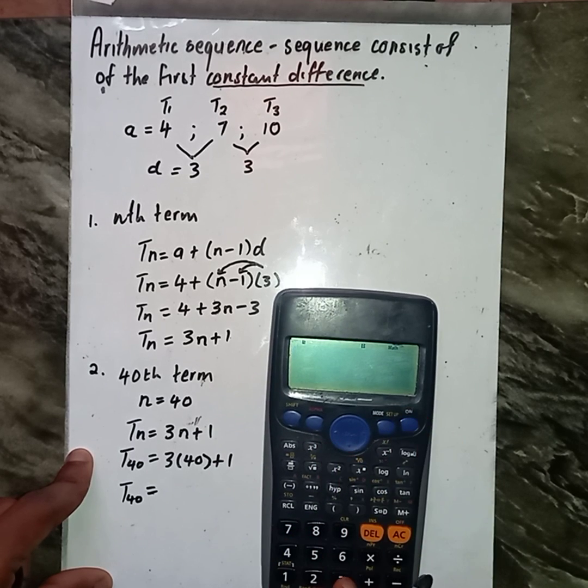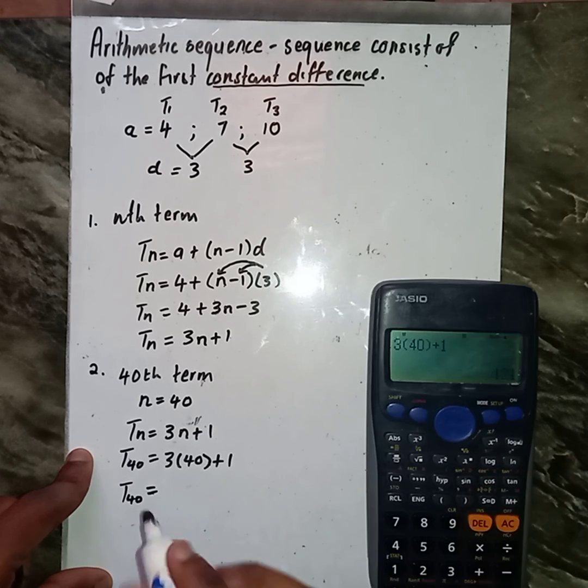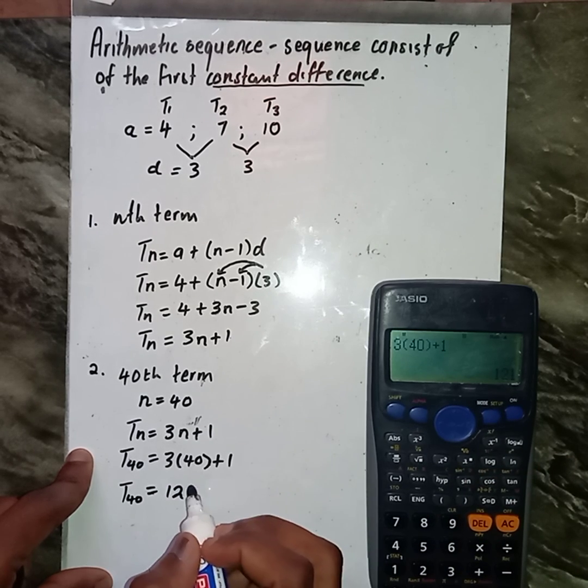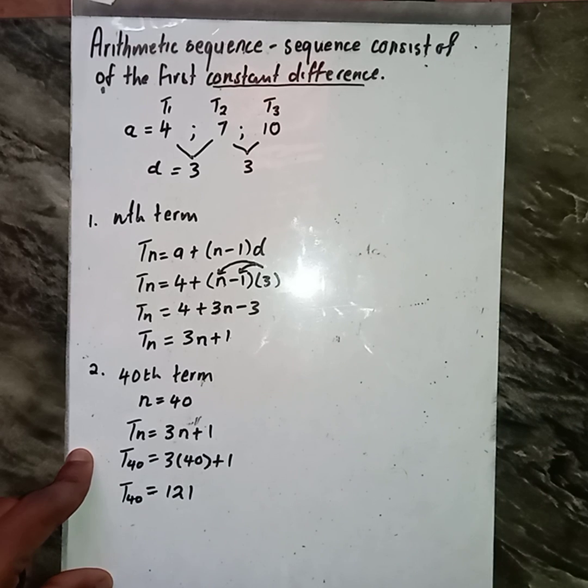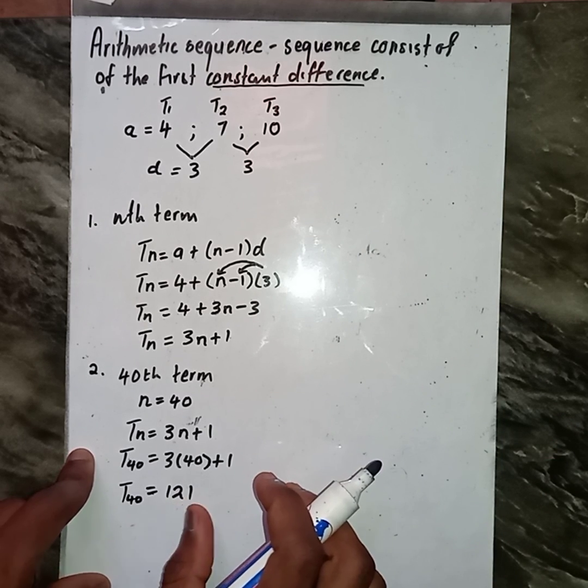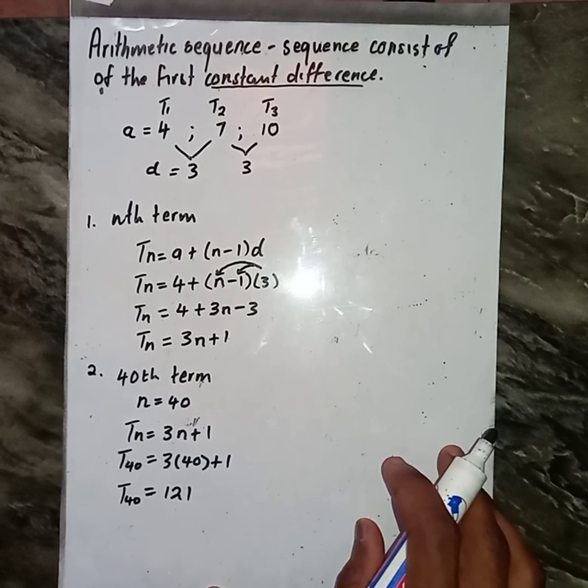Let's see what we're going to get from here. We do have our calculators. 40 times 3 plus 1, we get 121. This means term number 40 is going to be 121.